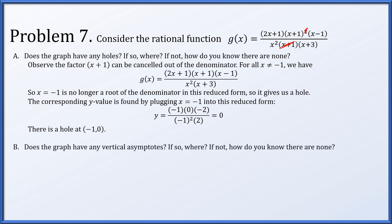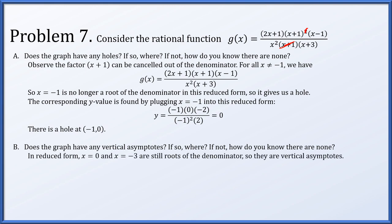Does the graph have any vertical asymptotes? x = 0 and x = -3 are still roots of the denominator in reduced form, so those are the vertical asymptotes: x = 0 and x = -3.